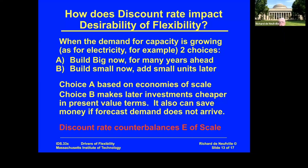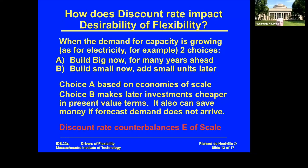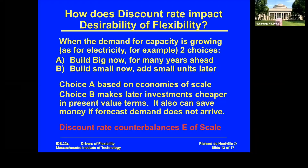Choice A is based on economies of scale. Choice B has this particular feature: if you decide to build capacity when you need it, not all now — because if you're building for the next 10 or 15 years, maybe in three or four years, that extra addition — if your money is expensive, you have a discount rate of 10% or 8% — the present value discounted over three years would be roughly 30% less. Or if the discount rate was 8%, it'd be about 25% less. So by deferring the costs, you counterbalance the economies of scale.